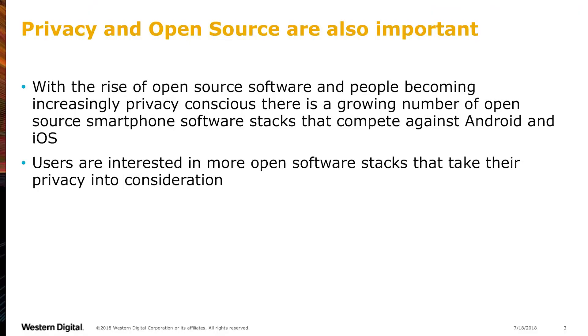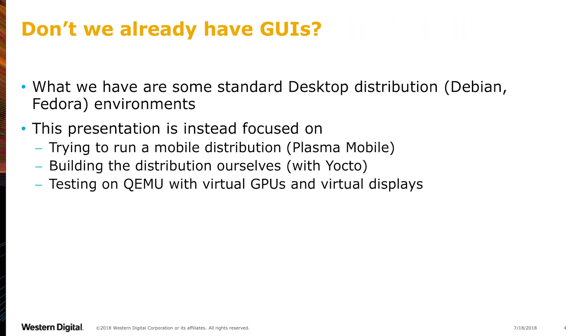Another concern everybody has is related to privacy, and everybody prefers open source software. Open source software gives you control over the entire ecosystem and caters to privacy concerns, so people are more and more interested in exploring that avenue. We've already seen graphical desktops running on RISC-V hardware with demos. What we are presenting here is not a full desktop distribution like Debian or Fedora, but a mobile distribution known as Plasma Mobile, which is based on KDE. It runs on physical Nexus 5 ARM devices, and we are building it with the Yocto distribution and testing it with QEMU virtual GPUs and displays.